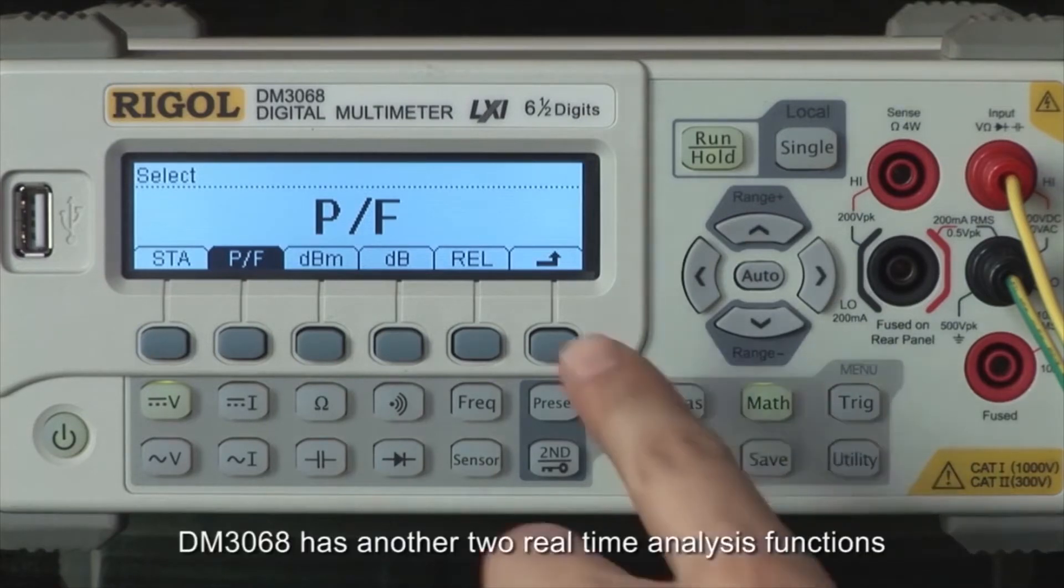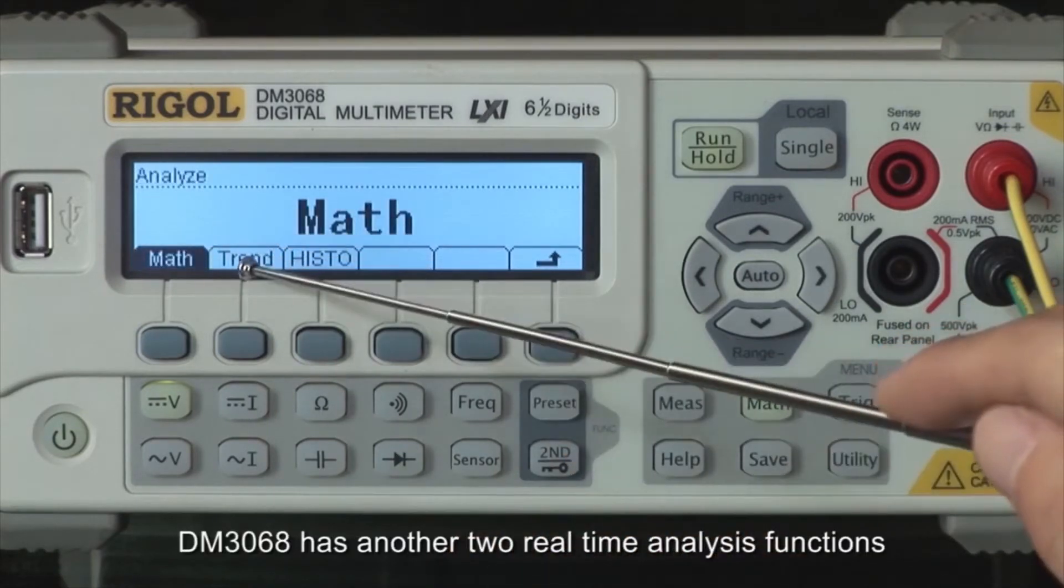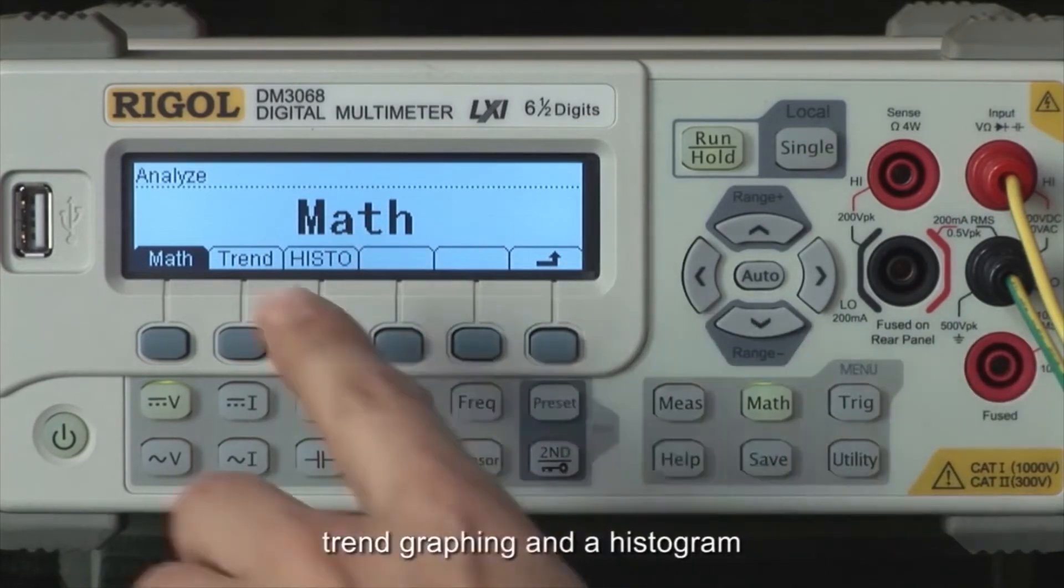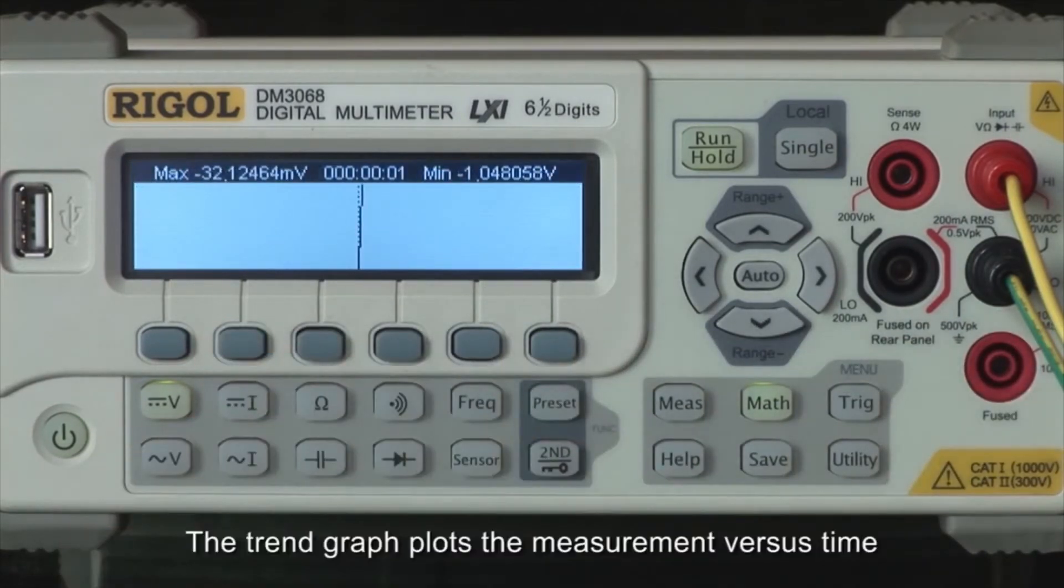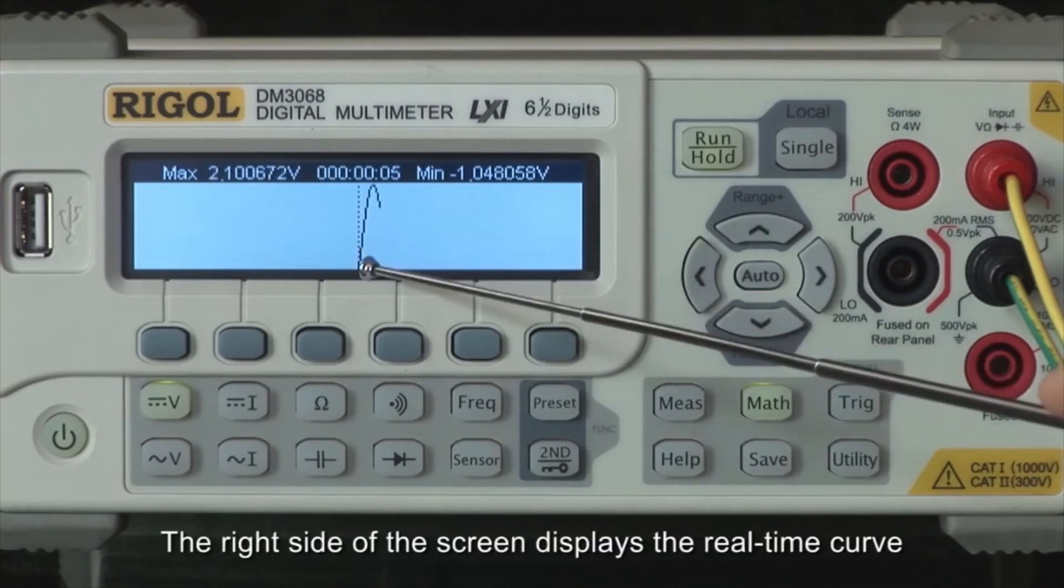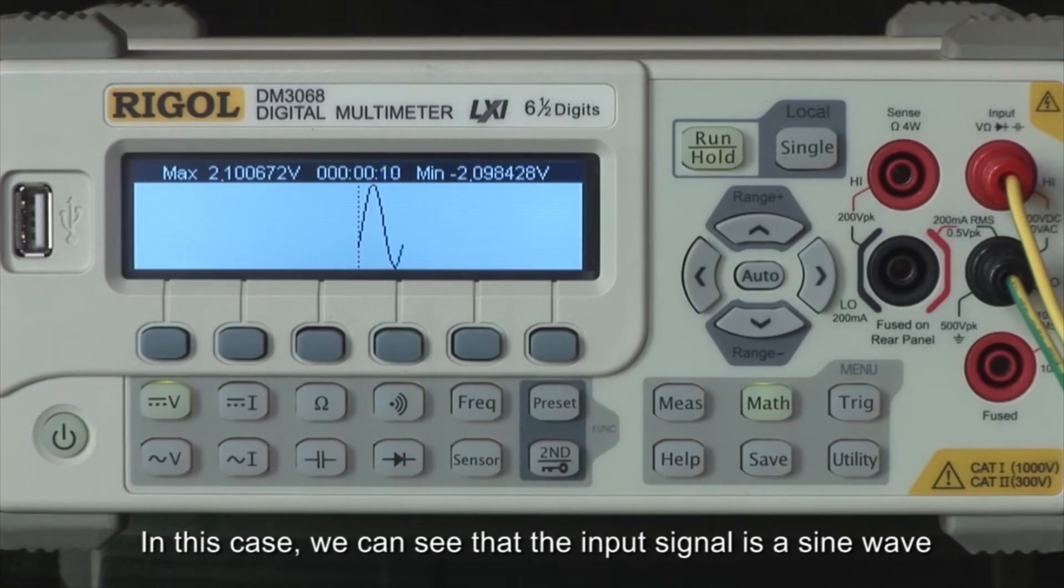The DM3068 has two real-time analysis functions: trend graphing and histogram. The trend graph plots the measurement versus time. The right side of the screen displays the real-time curve. In this case, we can see that the input signal is a sine wave.